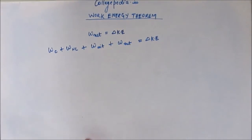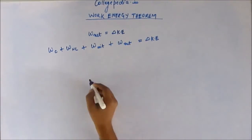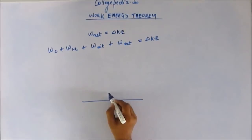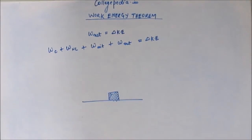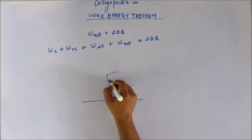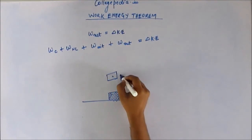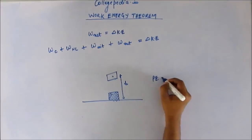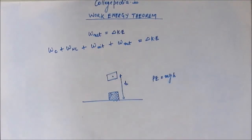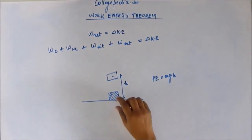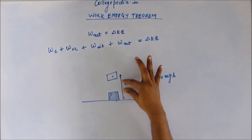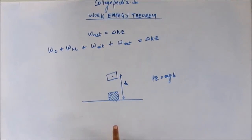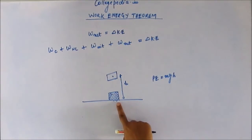Let's understand why this should be the case by considering a simple example. We have a block kept on the ground and we lift this block to a height h. At this point the potential energy of the block is Mgh. We lifted the block very slowly so that there is no net kinetic energy acquired by the block at all.